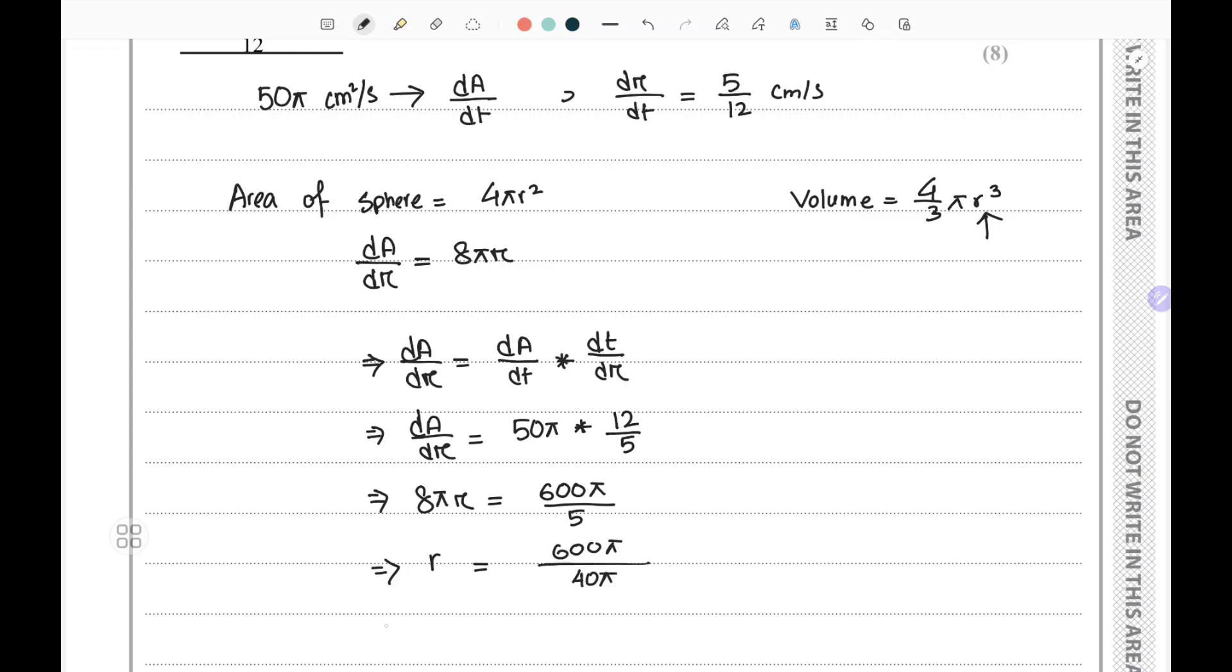So the value of r equals 600 divided by 40, and that is 15 centimeters. Now if I put the value of radius in the volume formula, it will be V = 4/3 π(15)³. So volume equals, 15³ is 3375.